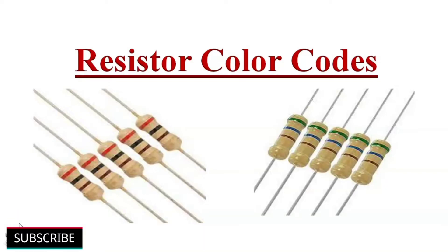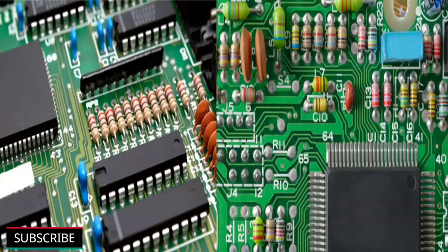Today we will learn about how to find the resistance value of a resistor by color codes printed on them. In resistors, we use different colors as codes to specify the resistance value. Resistors are usually very tiny and it is very challenging to print the resistance value on them, so color bands are printed to represent the electrical resistance.